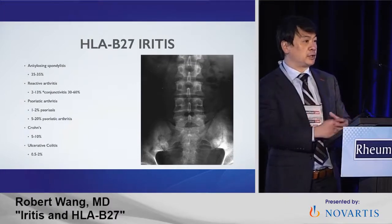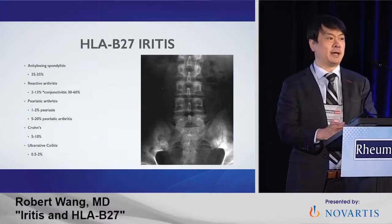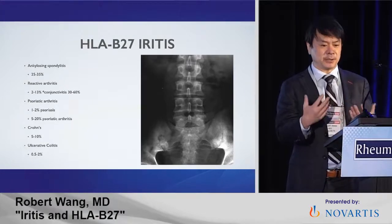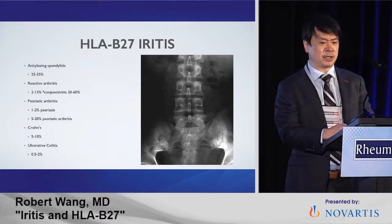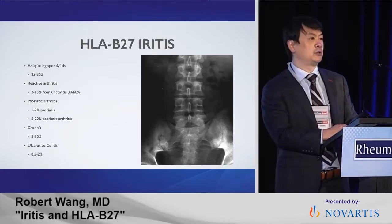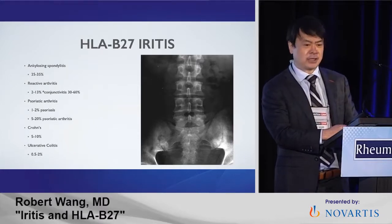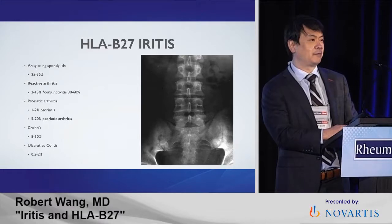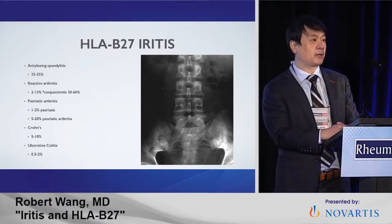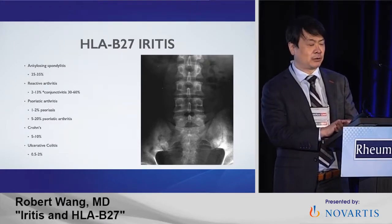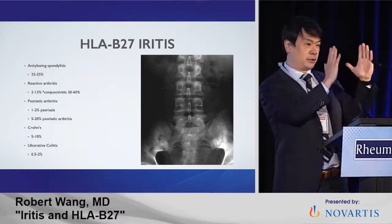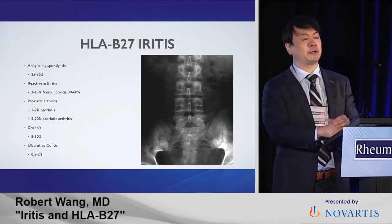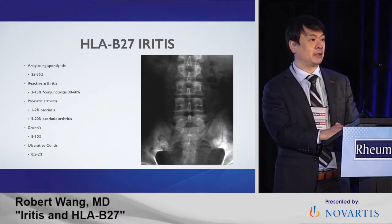The classic teaching for psoriatic arthritis is you have to have the arthritis to have the eye disease. Just having psoriasis alone is 1 to 2% — pretty uncommon. Crohn's and ulcerative colitis are super uncommon for anterior uveitis. One caveat: Crohn's and ulcerative colitis can get posterior segment disease, so they can also affect the back of the eye, but it tends to be a lot less common.